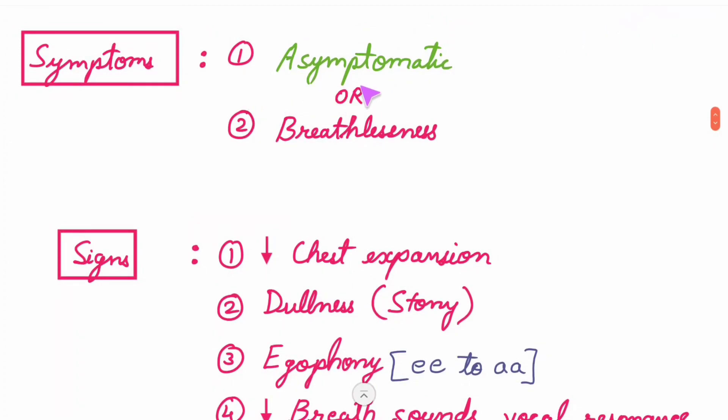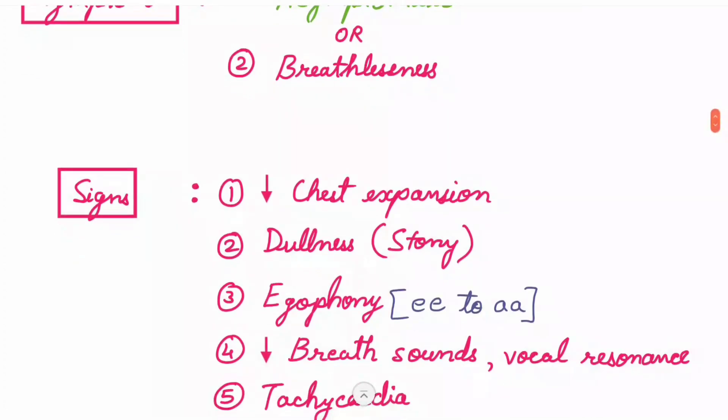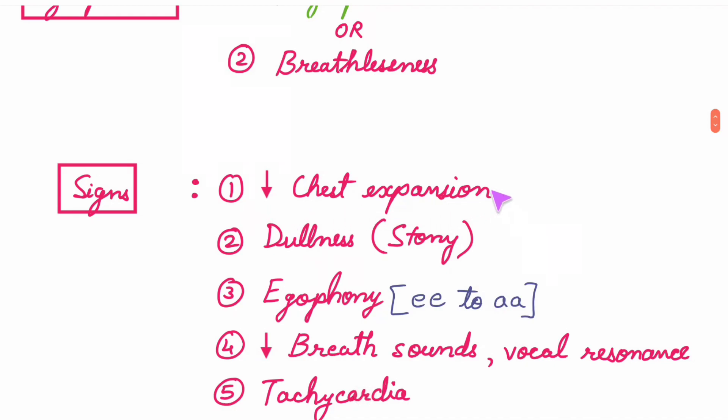Symptoms: the patient can be either asymptomatic or may experience breathlessness. Signs: decreased chest expansion, stony dullness, egophony, decreased breath sounds and decreased vocal resonance, and tachycardia.